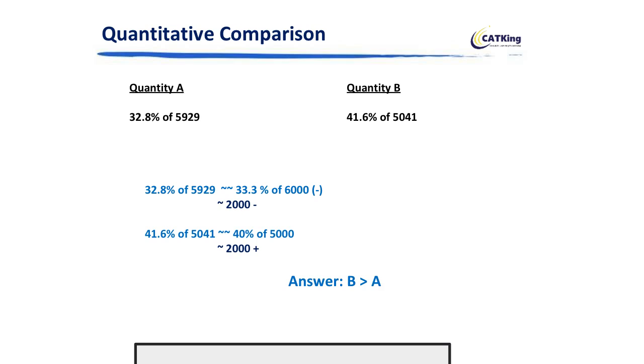How sweet this is! Now I have one quantity A which is less than 2000, quantity B which is greater than 2000, so my answer is pretty straightforward: B is greater than A. So that's what you have to do. You don't have to calculate the exact answer, just do approximations and get to the conclusion which quantity is greater than the other one.